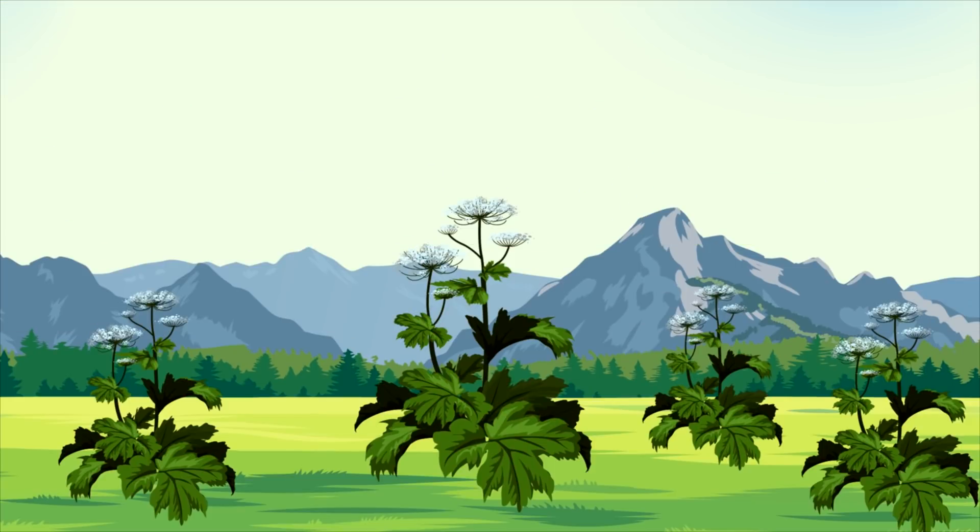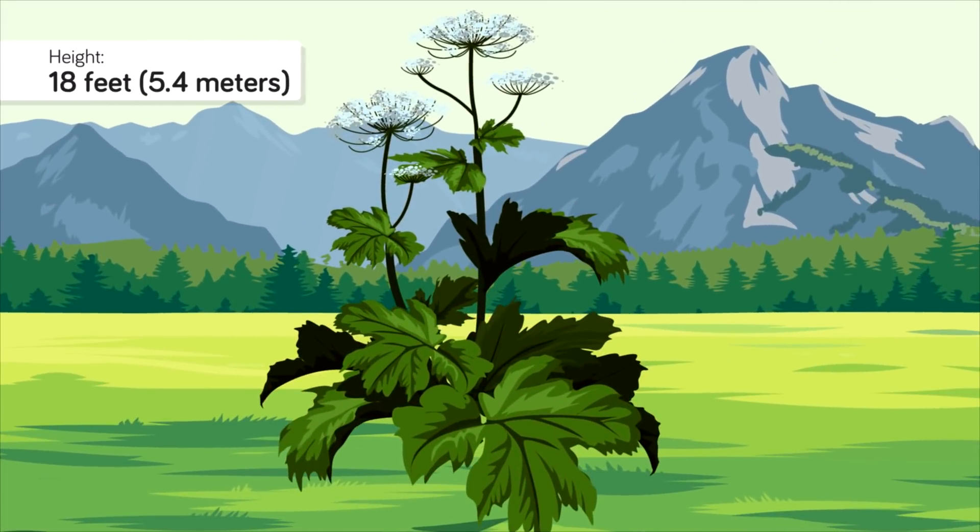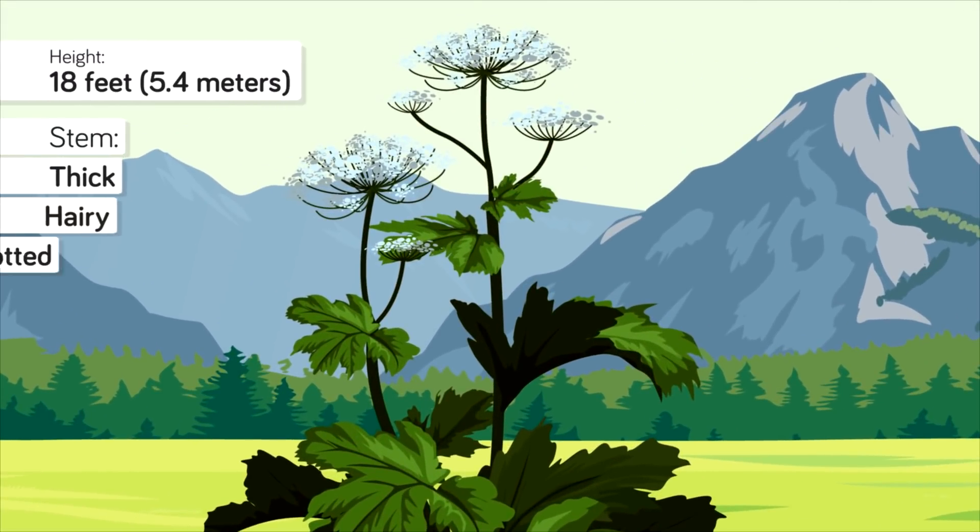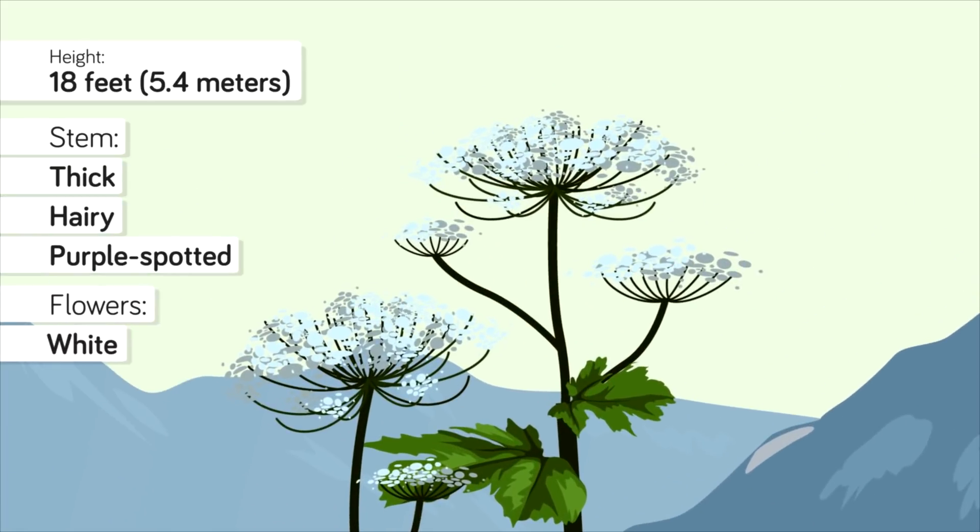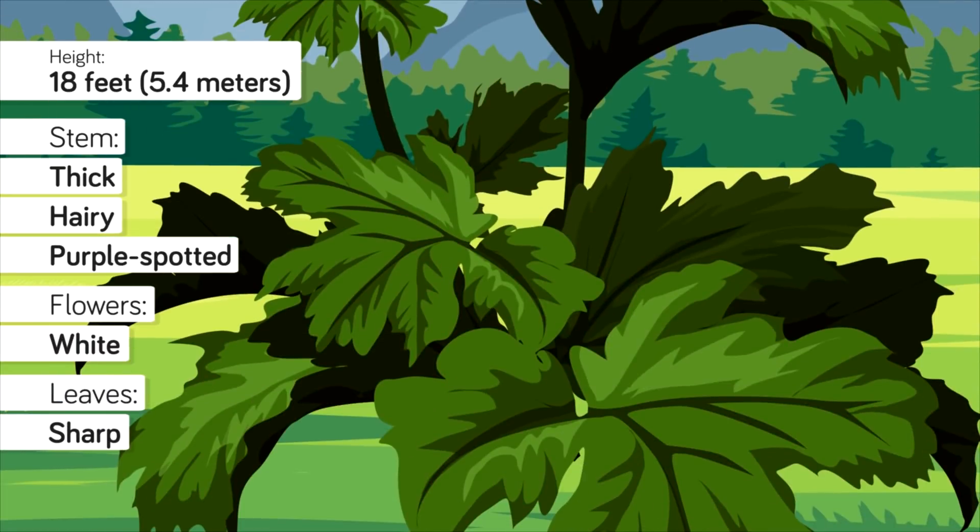So, how can you avoid the giant hogweed, aka Heraclium mantegasianum? As you know by the name, it can grow to a great height, reaching as high as 18 feet. It has a thick, hairy, purple-spotted stem, and its flowers are white. Its leaves are sharp, kind of spiky-looking like bat wings. If you see it, report it to the authorities and they will likely do something about it.